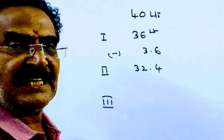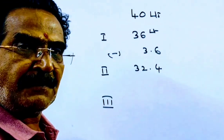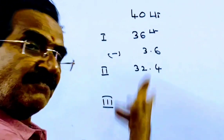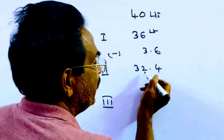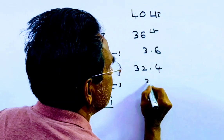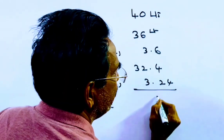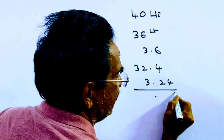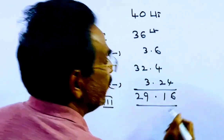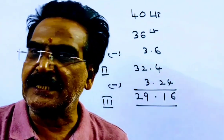Again, 1 tenth of the mixture is drawn, meaning 1 tenth of the milk and 1 tenth of the water is drawn. So 1 tenth of 32.4 is 3.24. After 3 operations, 29.16 liters of milk will be remaining in the can.